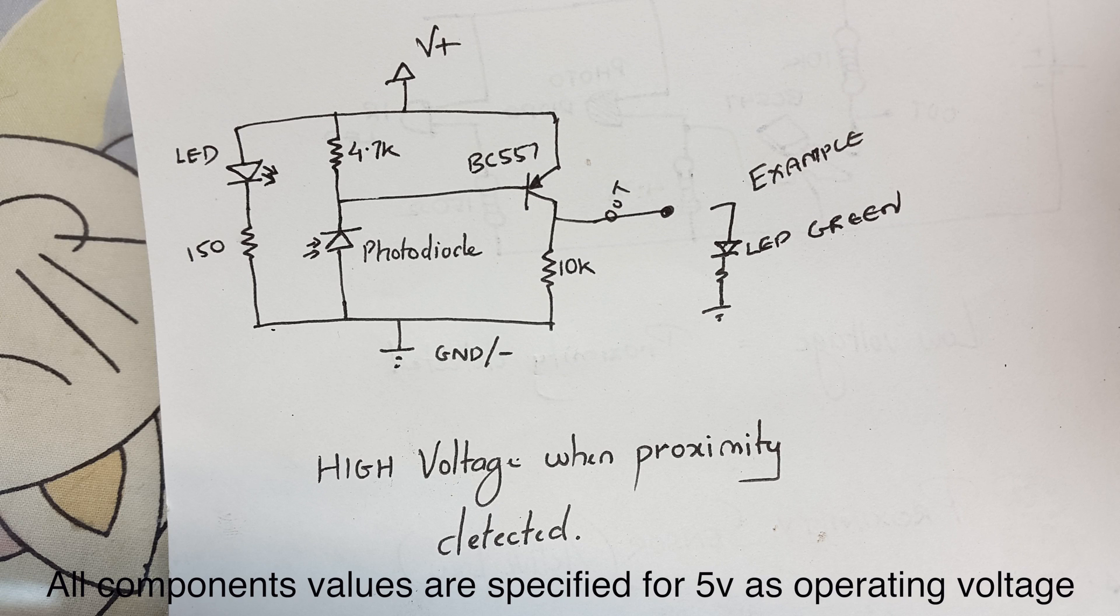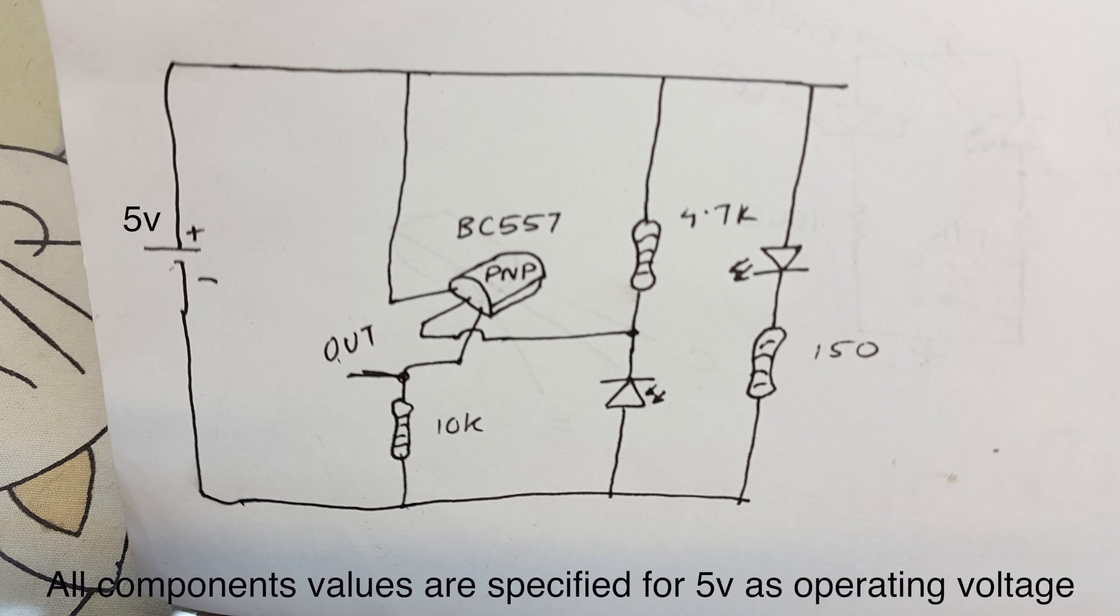...falls on the photodiode, the potential across the photodiode drops. This turns on the transistor, and hence we get a high voltage when there is proximity detection, otherwise low voltage is outputted.